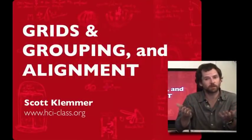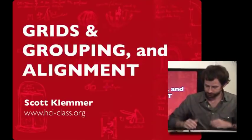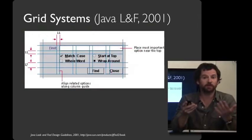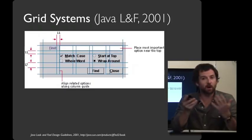In this video, we're going to talk about designing with grids and using grouping and alignment to convey structure. Here's an example of a grid. This comes from the Java look and feel design guidelines, and it's annotated by Sun on this web resource. What we mean by a grid is that there's a set of invisible lines that all of the elements on the screen snap to.